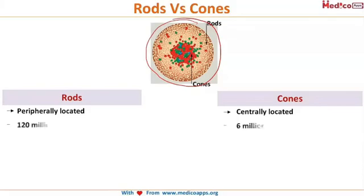Now coming to the number, you can see from the picture also that rods are very much high in number compared to the cones — that's almost 20 times the number of cones. Rods are 120 million in number and cones are only 6 million in number.